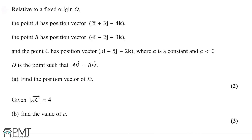This question is about vectors. Relative to a fixed origin O, point A has position vector 2i plus 3j minus 4k. Point B has position vector 4i minus 2j plus 3k. Point C has position vector ai plus 5j minus 2k, where a is a negative constant. Finally, D is a position vector such that going from A to B is the same as going from B to D.